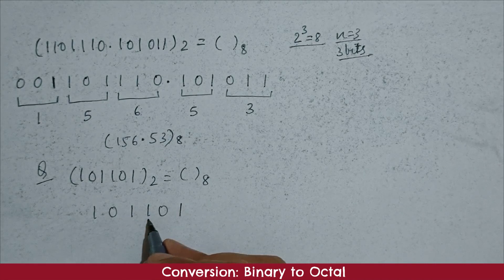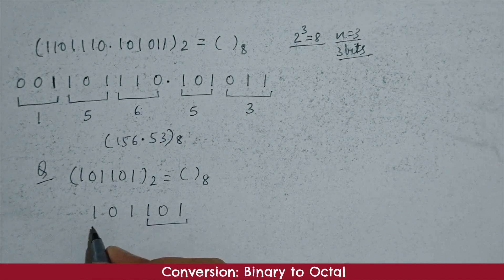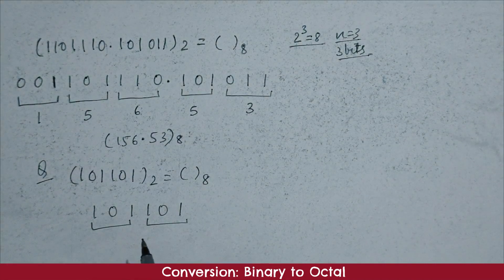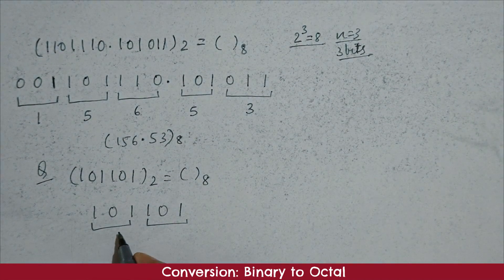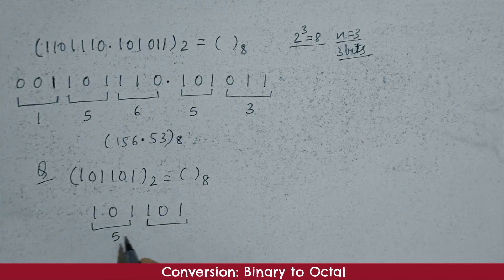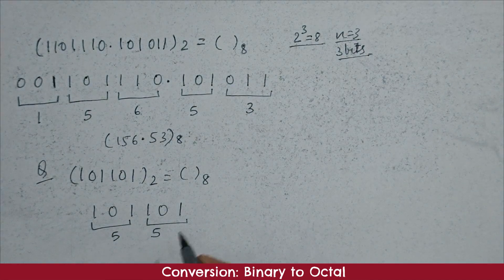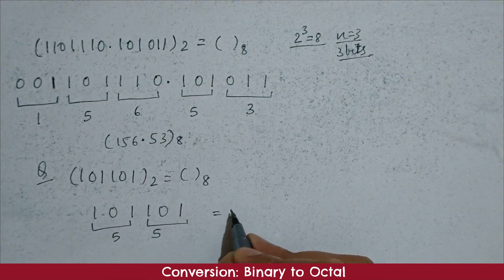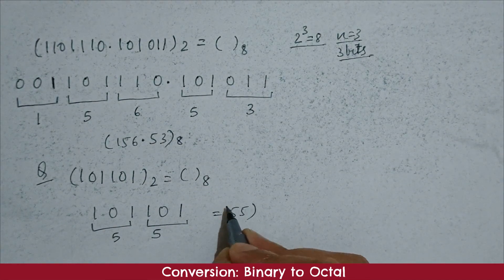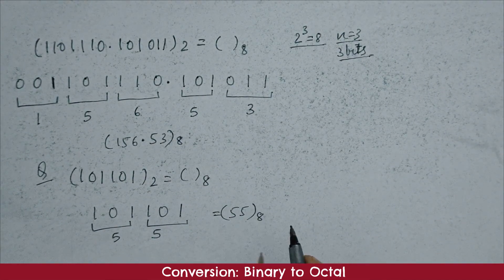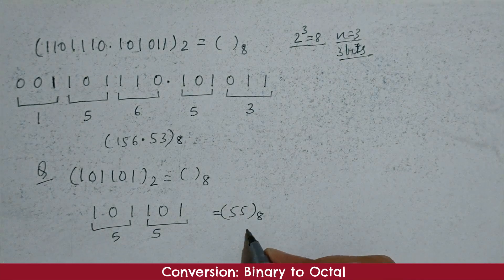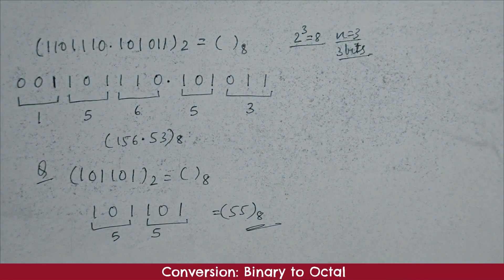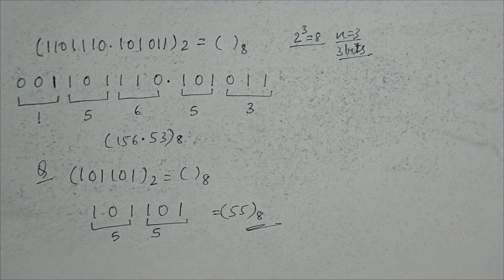Hence, here in the integer, make the group of 3 digits from right side to left side. Then the value of this group is 5, and the value of another group in decimal is 5. So 55 will be our final value in octal. I hope that you have understood this concept.